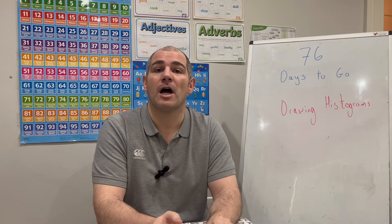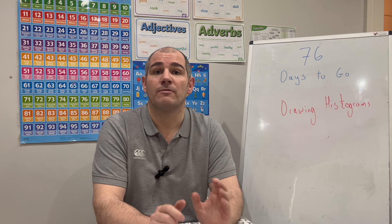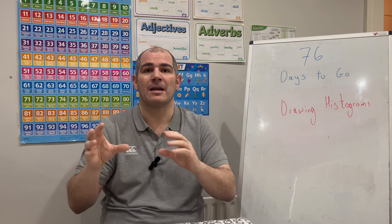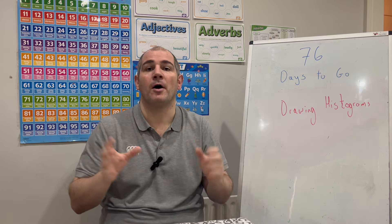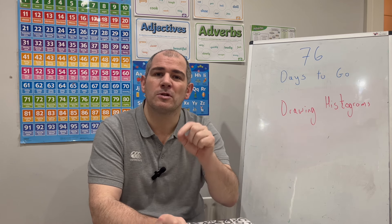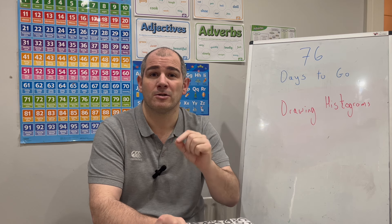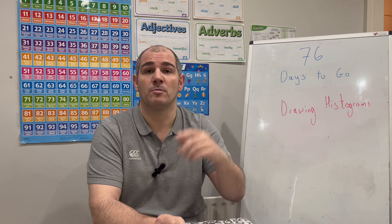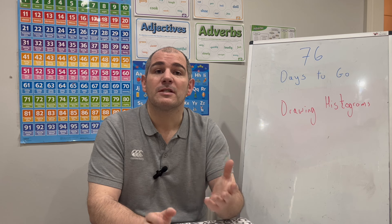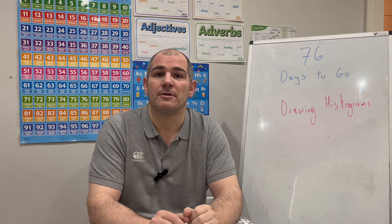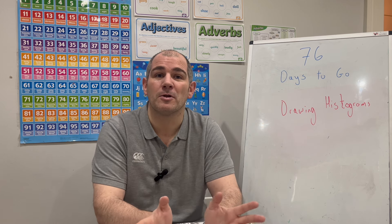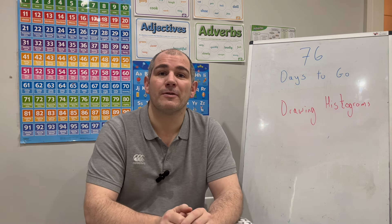So in this video we've looked at how to draw histograms using the fact that frequency density equals frequency divided by class width, working out the frequency densities for each category, then using those as the heights of each bar. Make sure you're doing the practice questions below, focusing on the drawing questions today. Tomorrow we'll cover reading and interpreting histograms — 75 days to go! The next video will be out at 3 o'clock tomorrow. Thanks very much, good luck with your revision, cheers, bye.